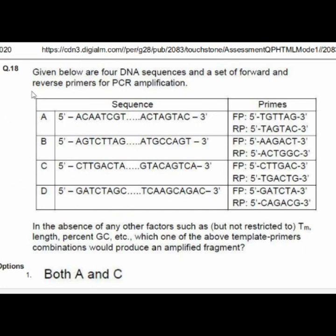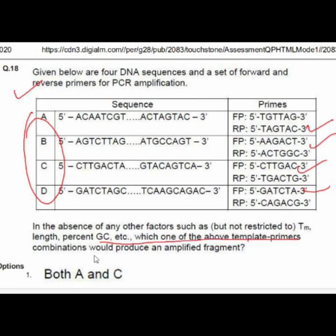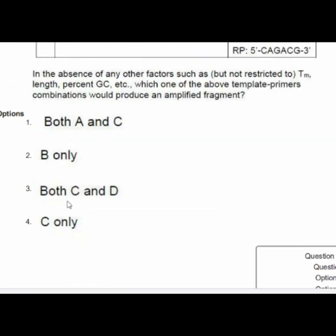Question 18 gives four DNA sequences and a set of forward and reverse primers for PCR amplification. In the absence of other factors such as Tm, length, and percentage GC, which template-primer combination would provide an amplified fragment? Option 4 is correct: C only.